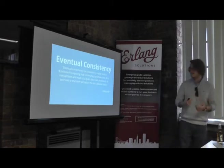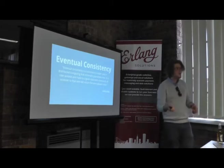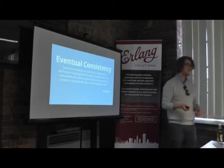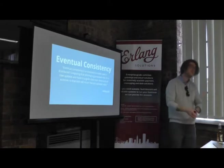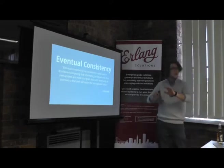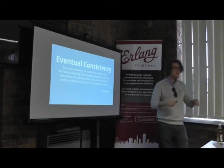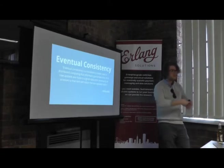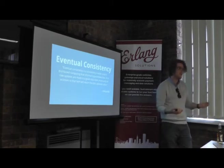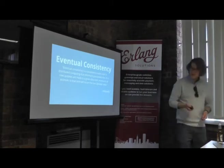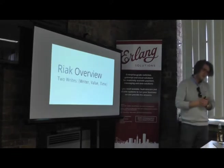In layman's terms: if I write data item x with value one and then value two, I may see value one for a while — value two might take a little bit of time to appear. That's eventual consistency: a liveness property that says eventually we'll see the right value, but we're never going to return a wrong value. Eventual consistency enables high availability because you don't have to have everybody agree on something at the exact same moment.